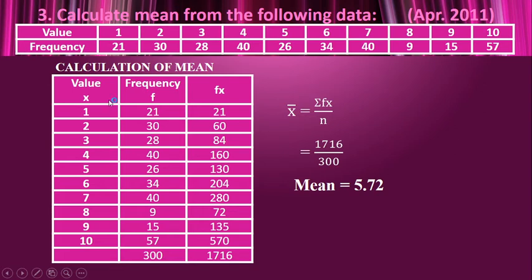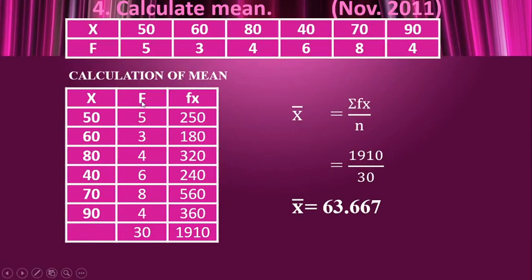Another similar question for practice. x values are 50, 60, 80, 40, 70, 90 and frequency is 5, 3, 4, 6 (and others). fx (f × x) is found, and the total of fx is 1910. Taking into the formula: σfx = 1910 / n = 30 (the total of the frequency). So x̄ is 63.667.